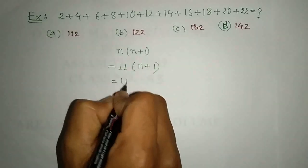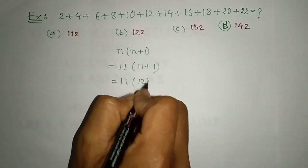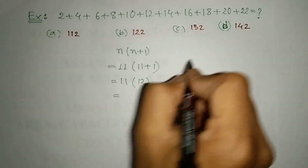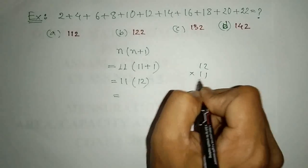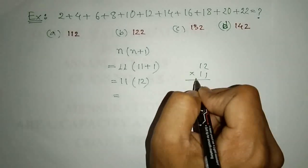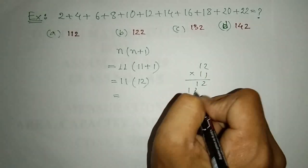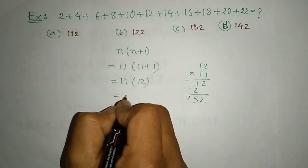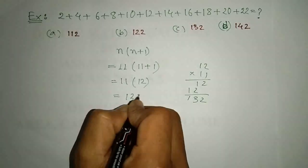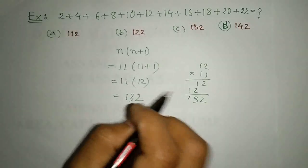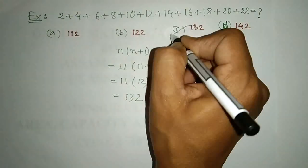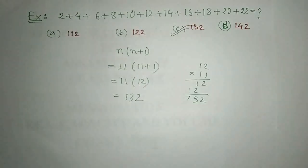If we are going to get 100, then n plus 1 is 12, so 12 into 11 is 132. That means that is the answer. This is option number C.